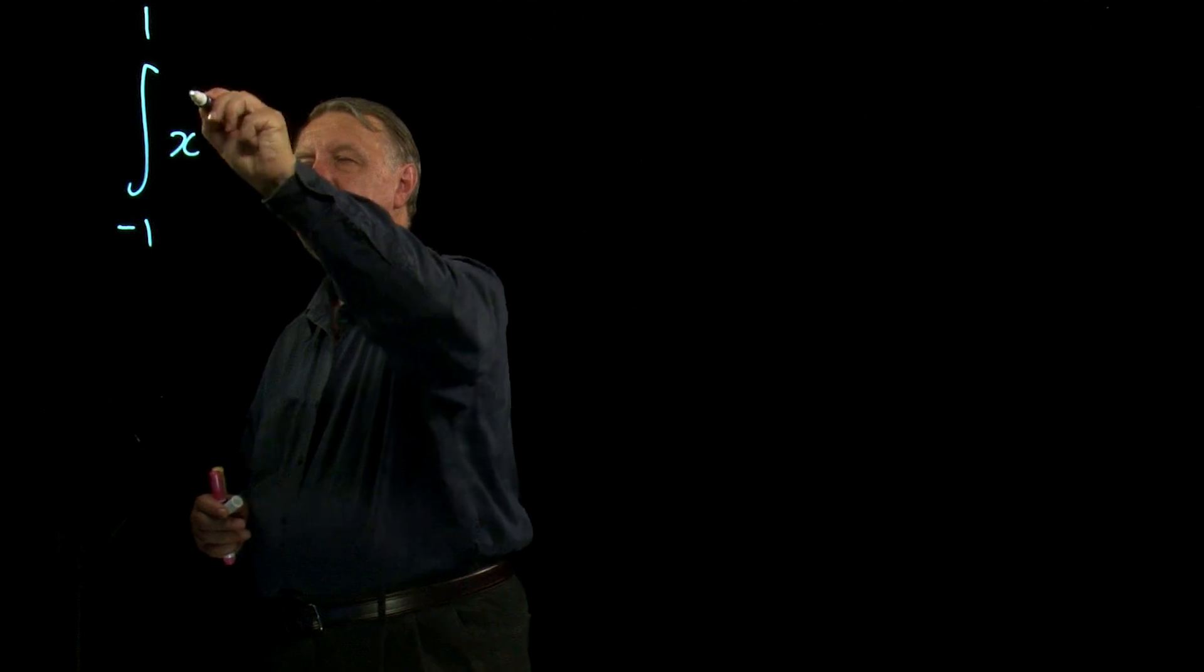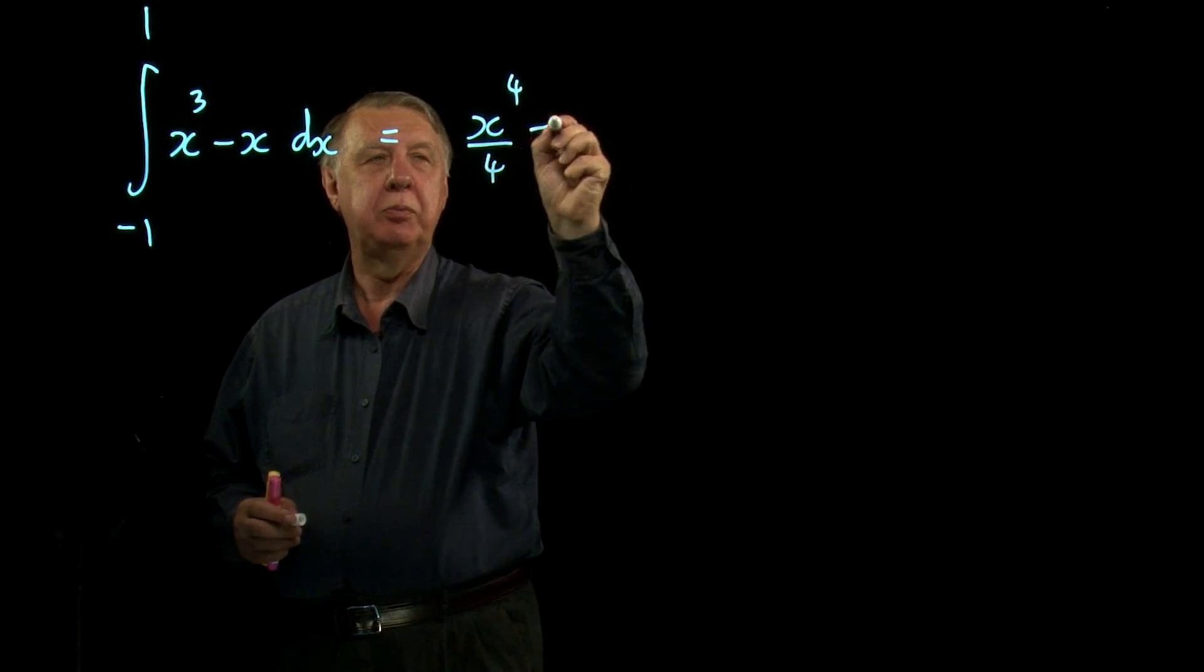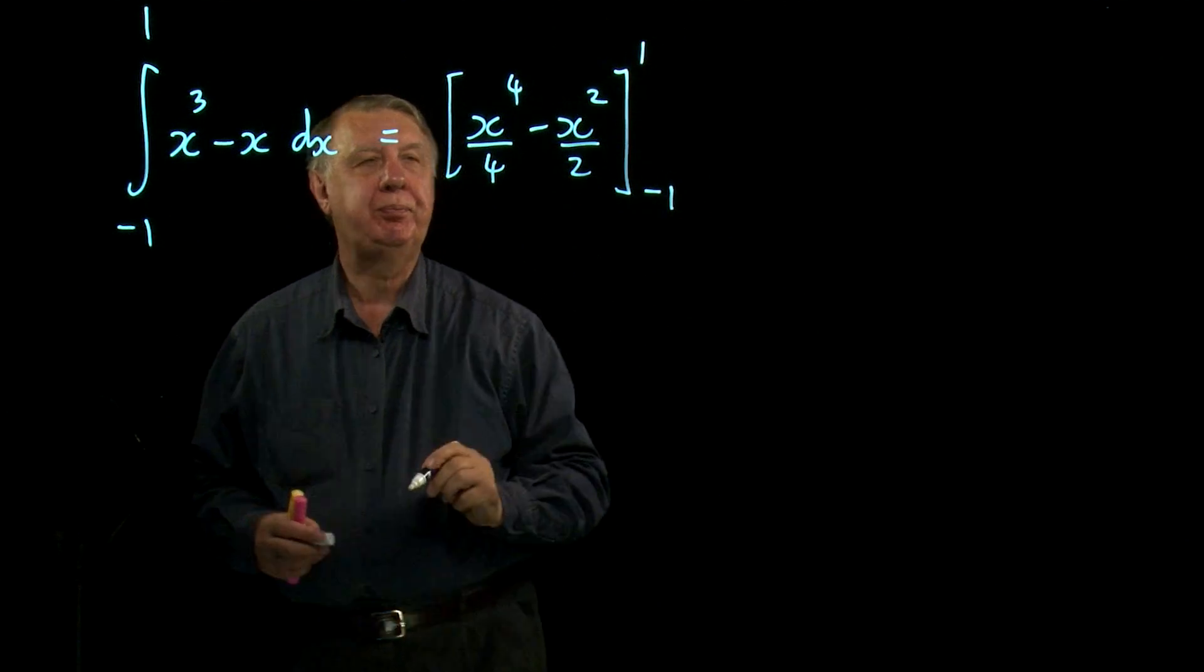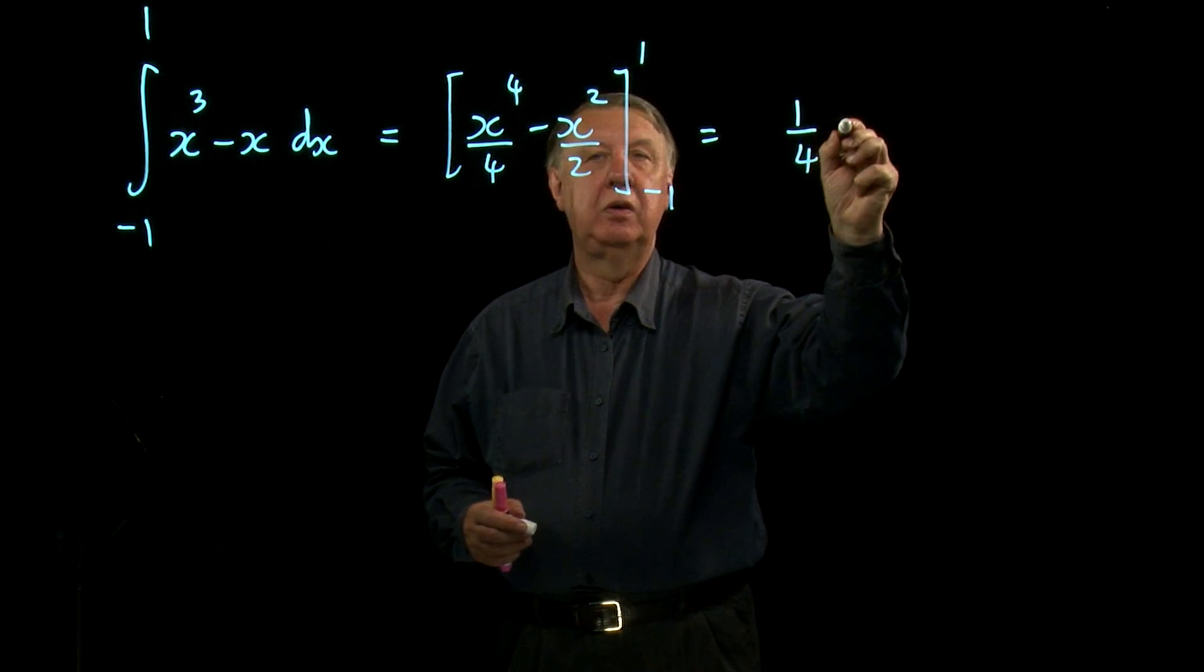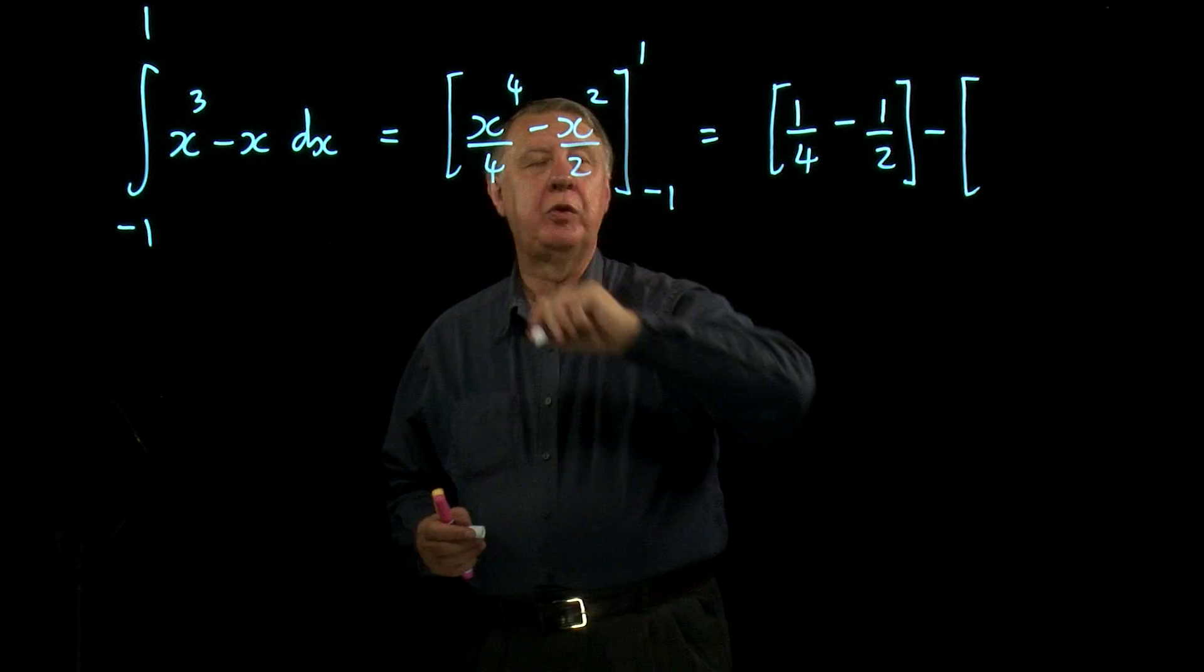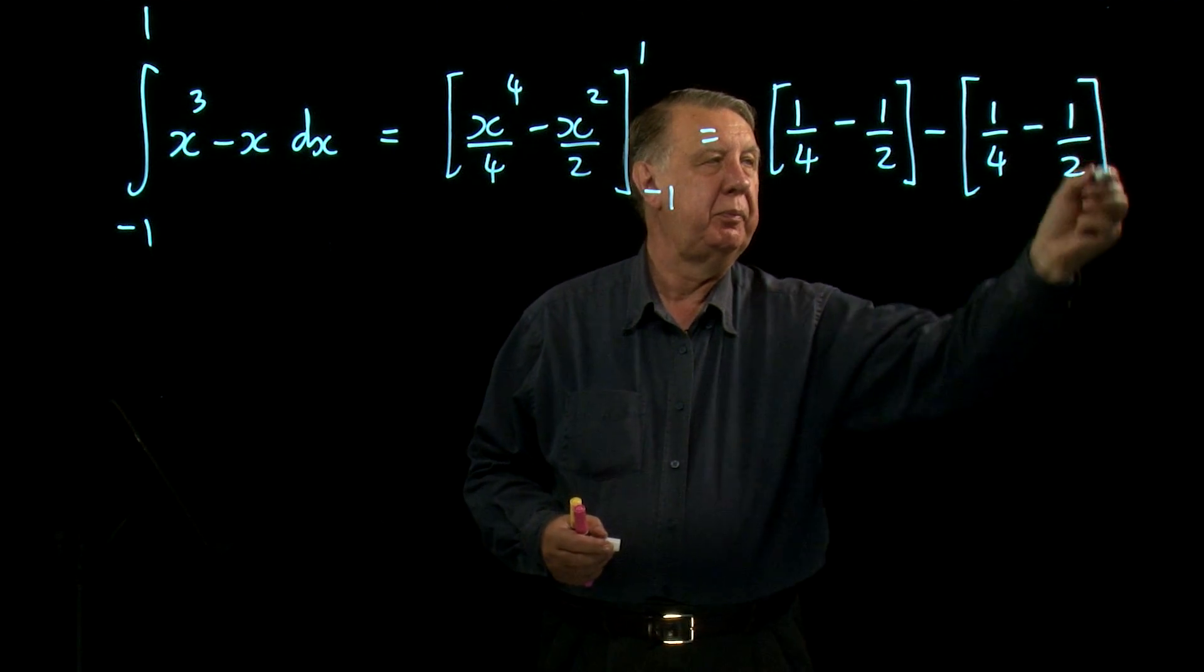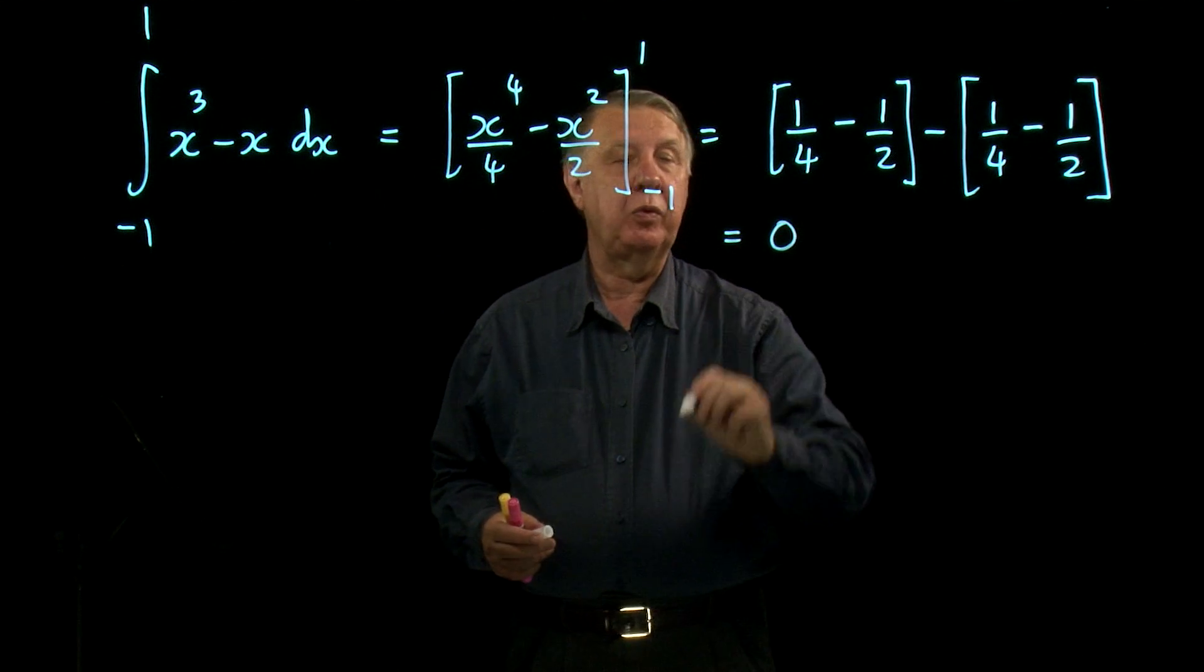Right, so let's just keep this in mind then about the negativeness and we'll look at negative 1 to 1 of x cubed minus x dx. So do the integral: x to the 4 over 4 minus x squared over 2, between minus 1 and 1. Pop the numbers in: 1 to the 4 is 1, 1 squared is 1, take away, now negative 1 to the 4 is still 1, and negative 1 squared is still 1.